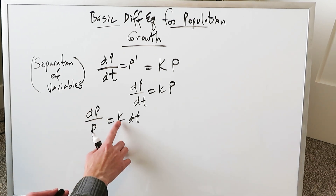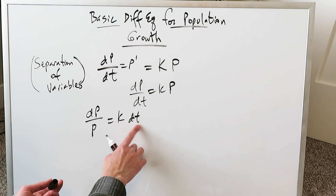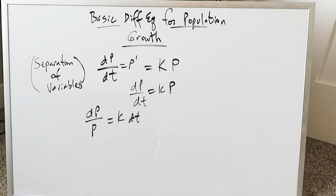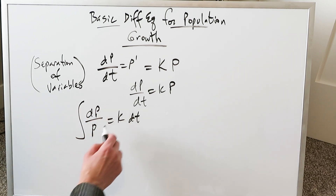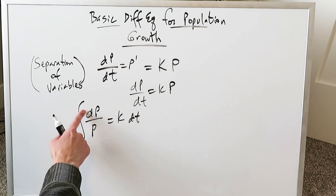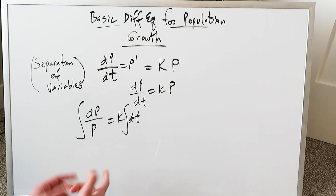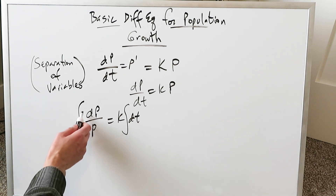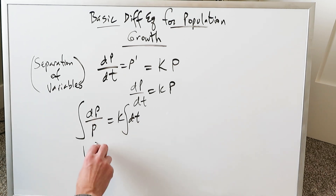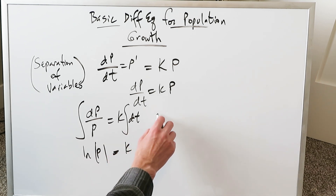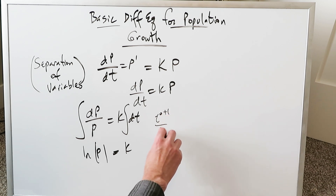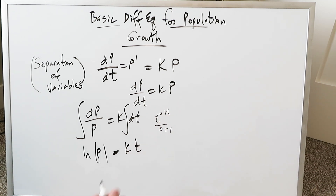If I write dp/p equals k dt, I've separated the variables — p on one side, t on the other, with the rate constant k staying in place. After separating the variables, you apply the integral. Integrating 1/p gives the natural log of p, equal to kt. Using the power rule on t gives t, so altogether we get: ln(p) = kt + c.